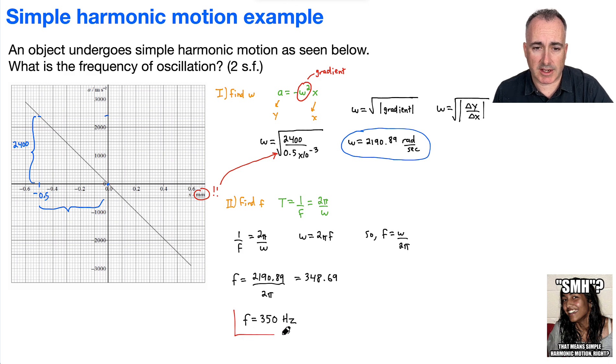So hopefully that made some sense. And I think it was a good example, because we used a graph to tell omega, and then we used an equation to get from omega to the frequency.